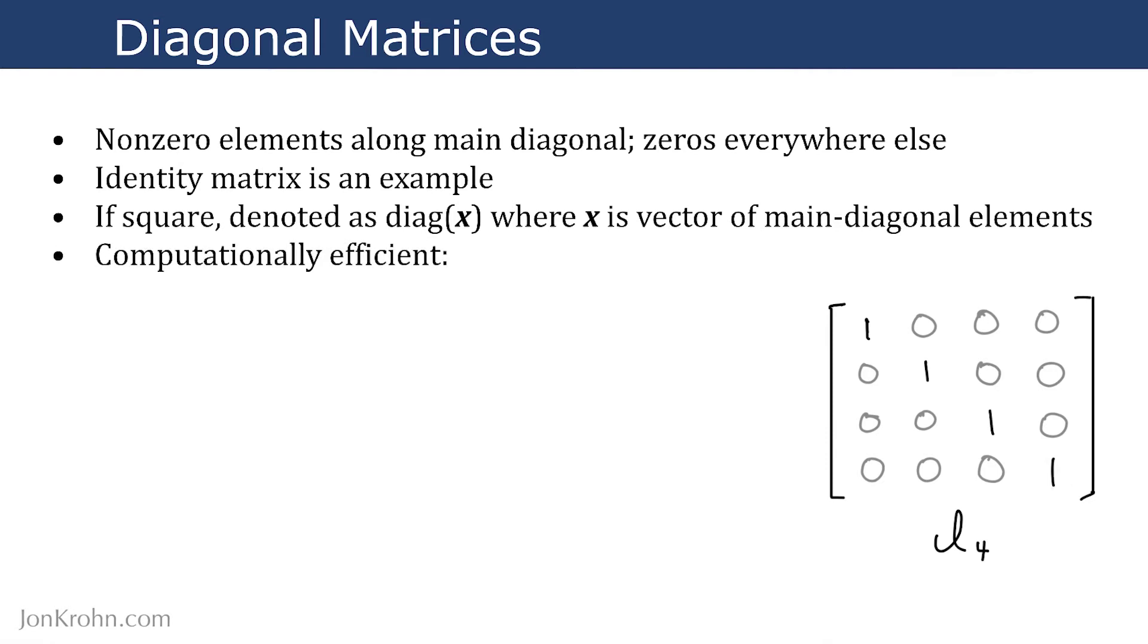For multiplication, if you want to multiply some diagonal matrix x times some vector y, this is computationally exactly the same as performing the dot product or Hadamard product between the vector x and the vector y.